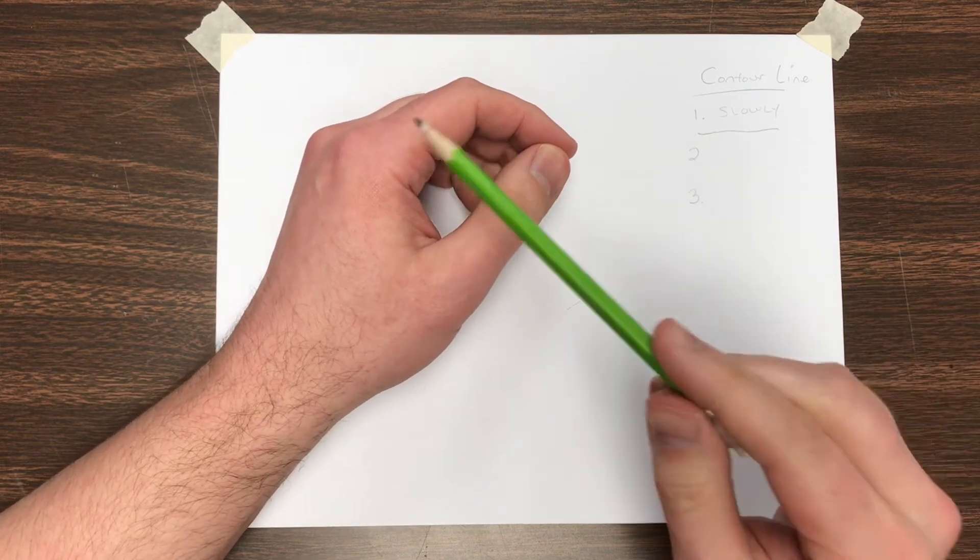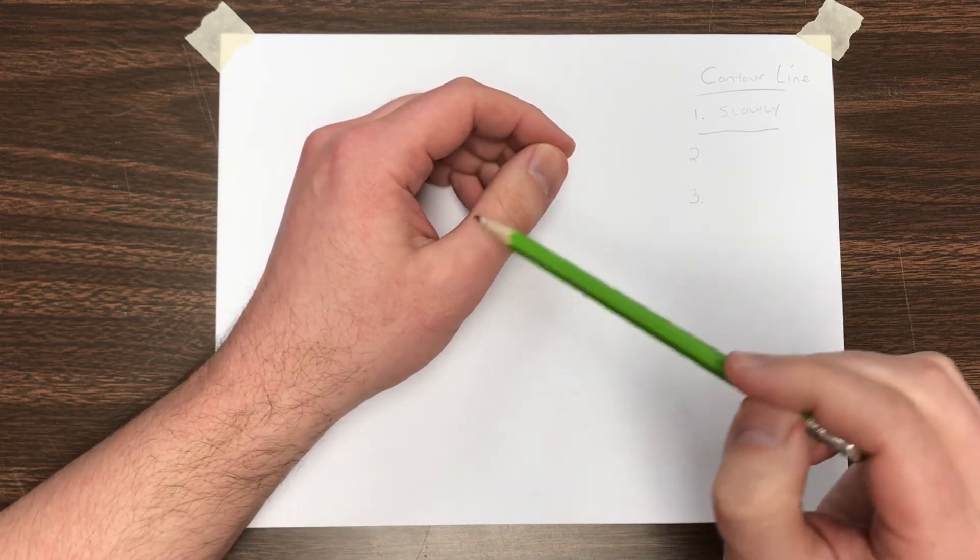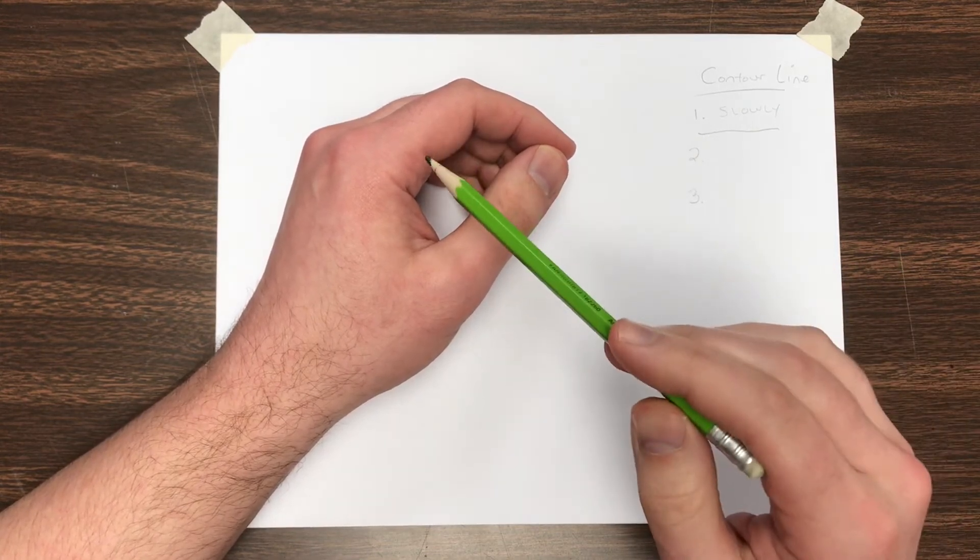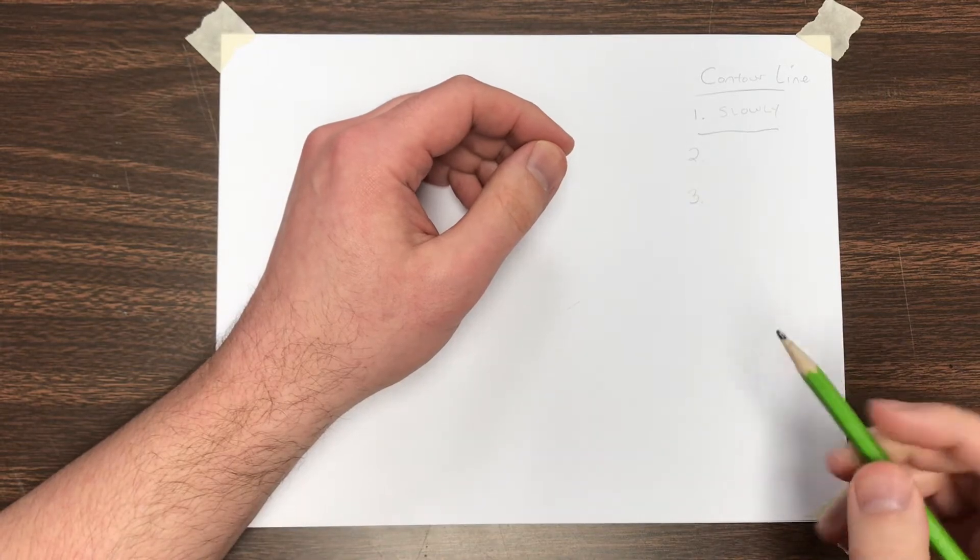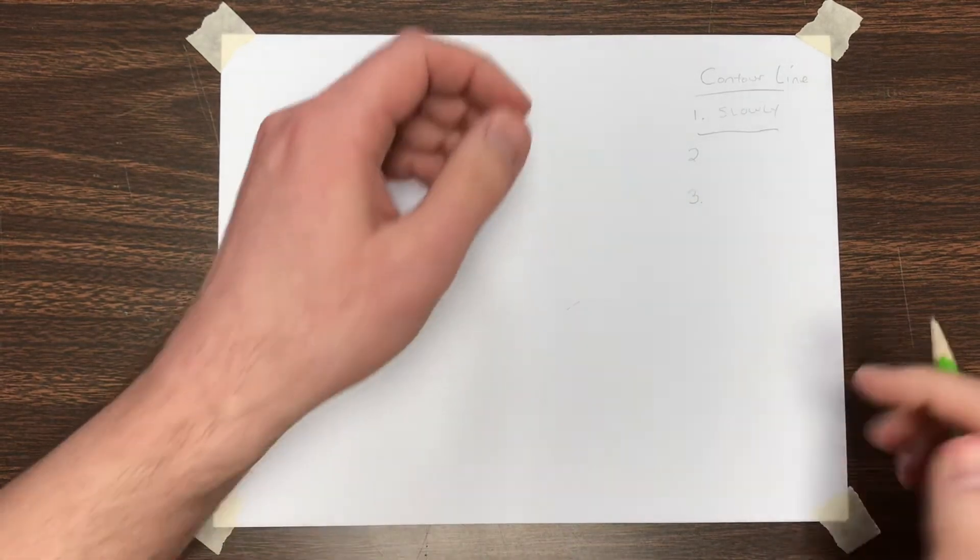The reason for that is if I draw really fast, sketching out my fingers, I'm going to miss all of the little details that are going to make my drawing look realistic. So you want to draw very slowly.